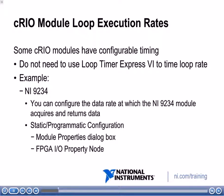You can configure the data rate either using a static dialog box — you can open up a dialog box for the module properties and set the data rate there, which will set the acquisition rate that the module will acquire data at — or you can also do this programmatically using an FPGA IO property node. We'll talk about both of these.